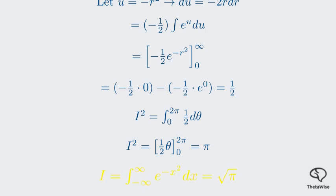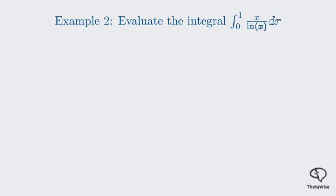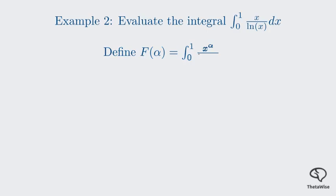We just proved the famous Gaussian integral using a combination of pattern recognition and a sneaky trick. Let's try another DUIS example that's a bit more direct. Our goal is to evaluate the integral from 0 to 1 of x / ln(x) dx. Just looking at this, it seems impossible — there's a discontinuity at x = 1, and x divided by ln(x) doesn't fit any standard integration techniques. Here's the trick: we introduce a parameter α into the integrand, replacing x in the numerator with x^α. We define f(α) = ∫₀¹ x^α / ln(x) dx. Our original problem is just f(1).